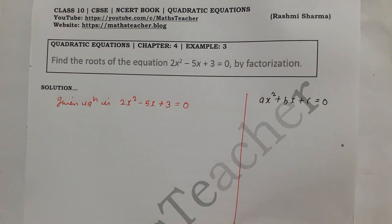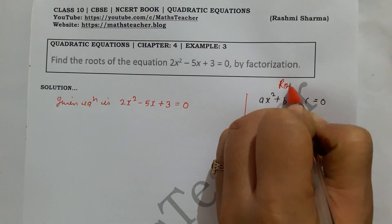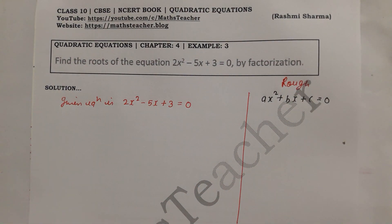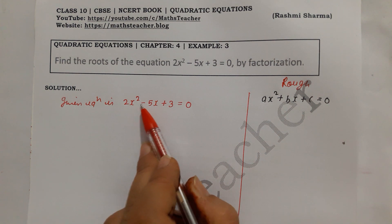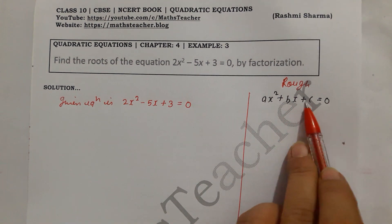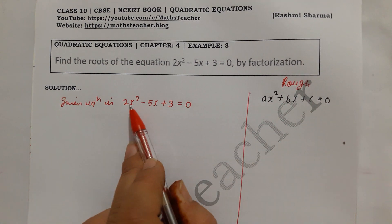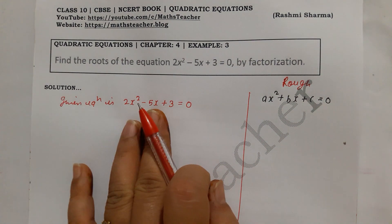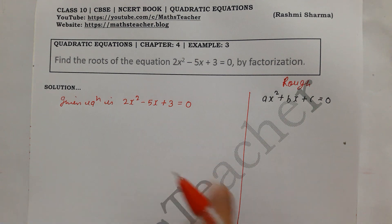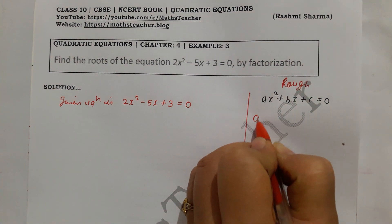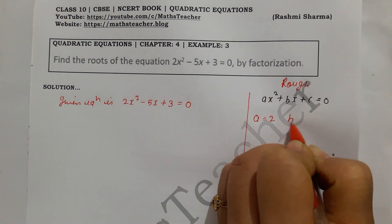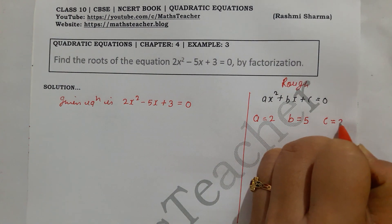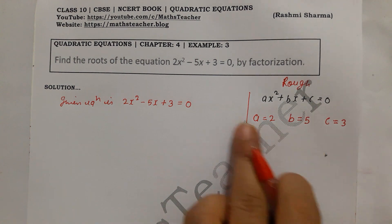We will do this part in rough work. We will explain the middle term splitting method. Just take the numbers — don't worry about the sign yet; we will handle signs separately. So: a is 2, b is 5 (ignoring the minus sign for now), and c is 3. We have taken these three numbers.